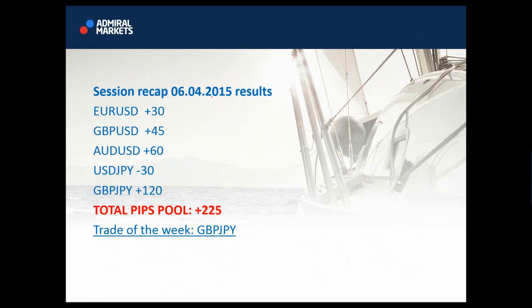Session recap, 6 April results: Euro dollar gave us 30 pips, pound dollar gave us 45 pips, Australian dollar gave us 60 pips, dollar yen was a loss of minus 30 pips, and pound yen gave us 120 pips. Total pips pool is 225. If you get 10, 20, or 30 percent out of that maximum pips pool, you are still good because you were in profit of 20, 30, 40 or more pips. These were the maximum available pips and the total pip numbers per trade.